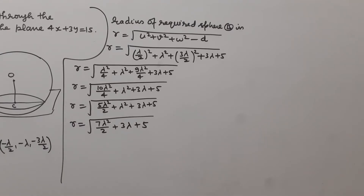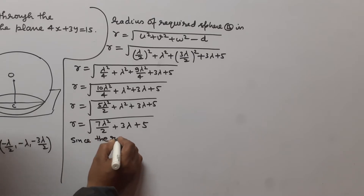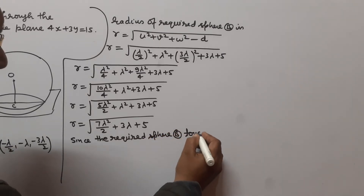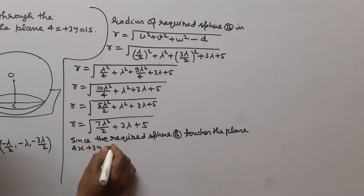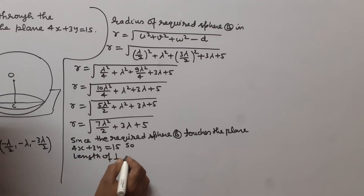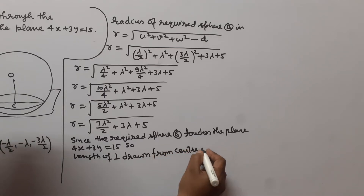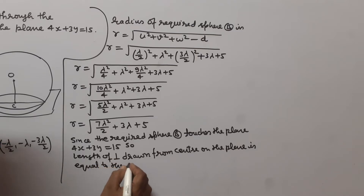Now, we have to find the equation of the sphere passing through the given circle and touching the plane 4x + 3y = 15. Since the required sphere B touches that plane, the length of the perpendicular drawn from the center to the plane equals the radius of the sphere.